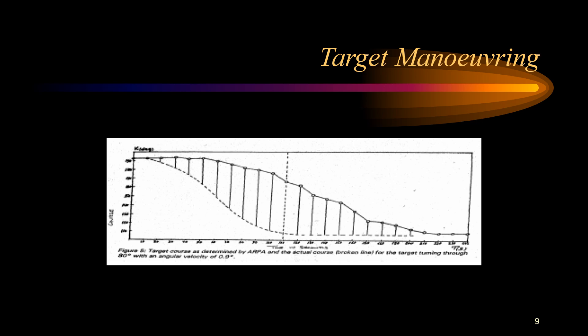The diagram illustrates the significant time lag between a target maneuvering and the change being registered on the ARPA, showing the difference between the target course as determined by the ARPA and the actual course. Here the target is turning through about 80 degrees with an angular velocity of 0.9 degrees. By waiting three minutes after a maneuver, the operator should be confident that the ARPA is providing track accuracy up to the limitations of the system. The accuracy figures quoted in ARPA manuals are for a non-maneuvering target. If a target maneuvers too violently, it is possible for the target track to be lost.